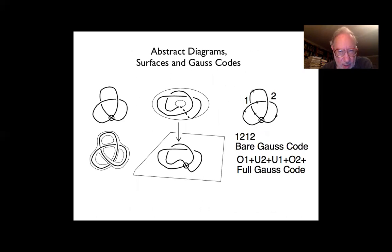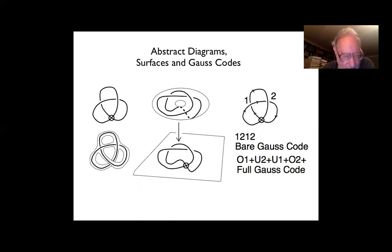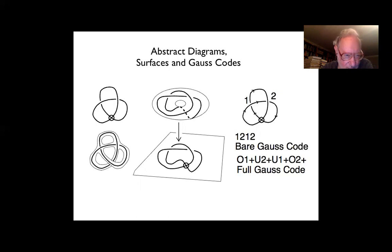An important way to think about virtual knots, rotational or otherwise, is through abstract diagrams and surfaces, and also Gauss codes. On the left I have a virtual trefoil knot with one virtual crossing and two real crossings. I've shown a way of producing a ribbon surface on which the knot is embedded, thinking of the surface as surface cross I, with a diagram drawn on it with no virtual crossings.